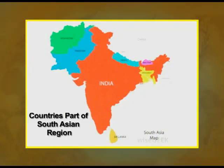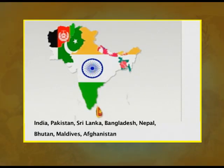South Asia is different from Southeast Asia. Southeast Asia is a sub-region of Asia consisting of countries located geographically to the south of China, east of India, west of New Guinea and north of Australia. Now, this is South Asia — look at this map showing all the countries which are part of the South Asian region. This includes India, Pakistan, Sri Lanka, Bangladesh, Nepal, Bhutan, Maldives and Afghanistan.